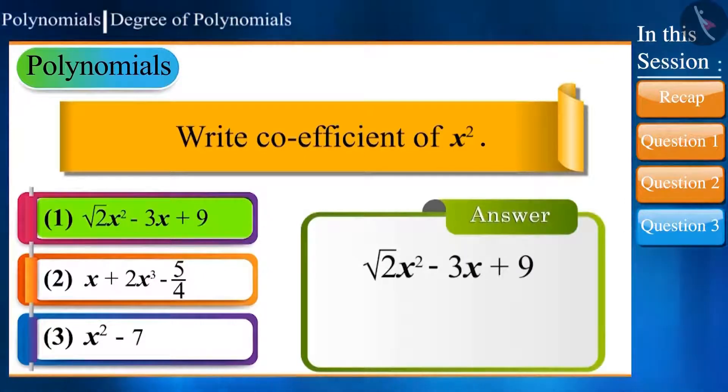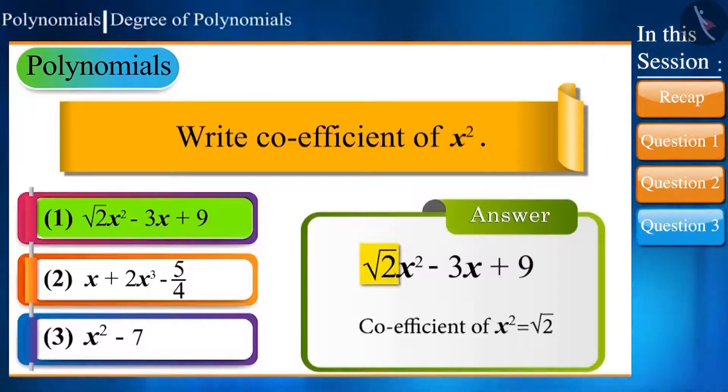In the first question, square root of 2 x square minus 3x plus 9, what is the coefficient of x square? We can directly say, square root of 2 is the answer.